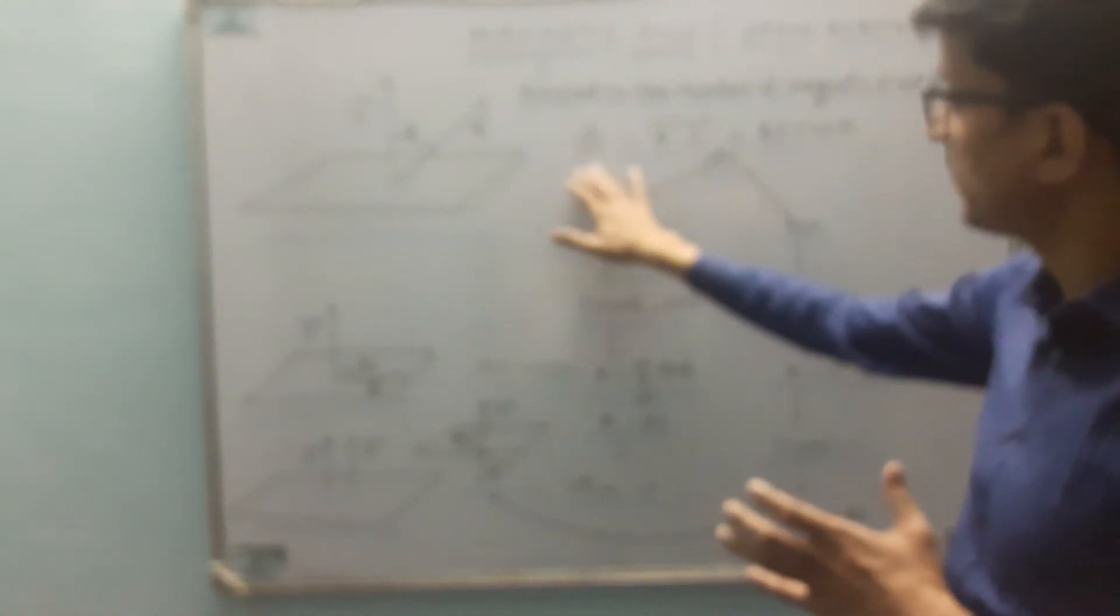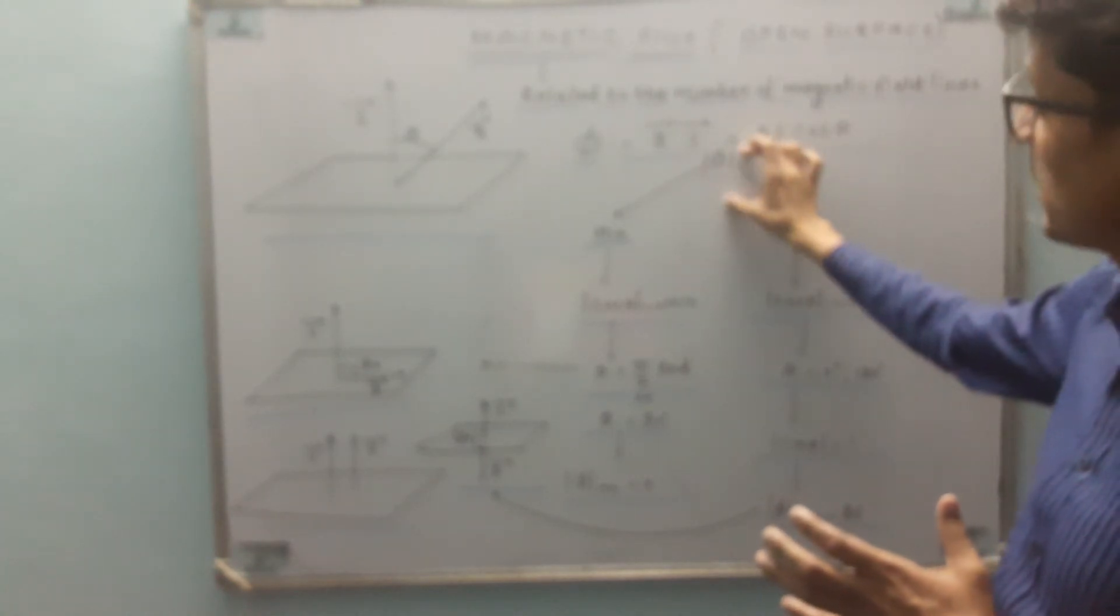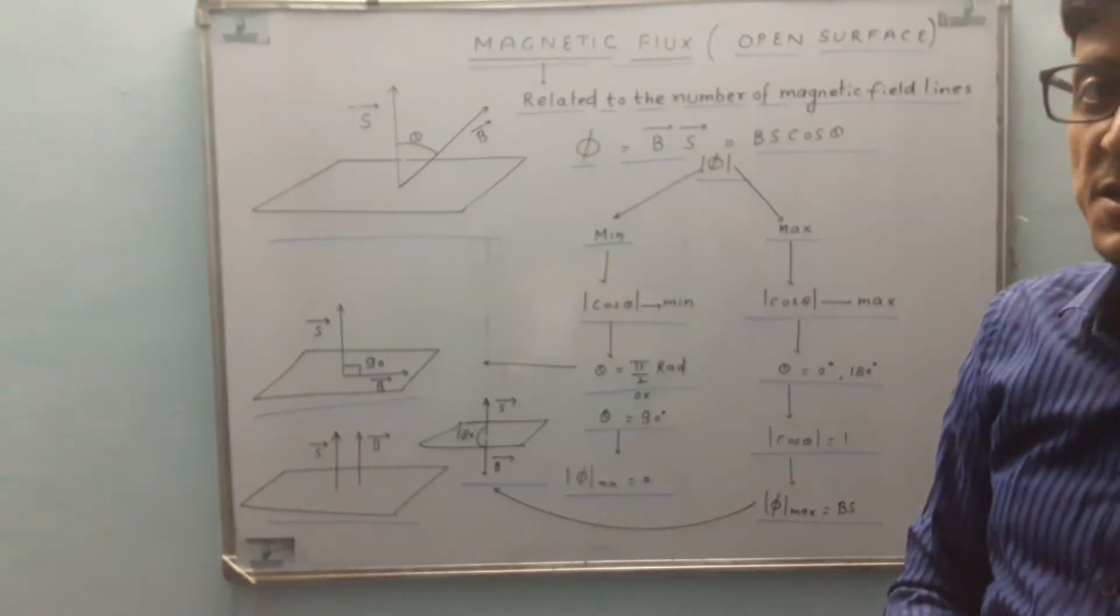The defined flux is B dot S which is BS cos theta. If we talk about the magnitude of this flux, it is proportional to the number of magnetic field lines.